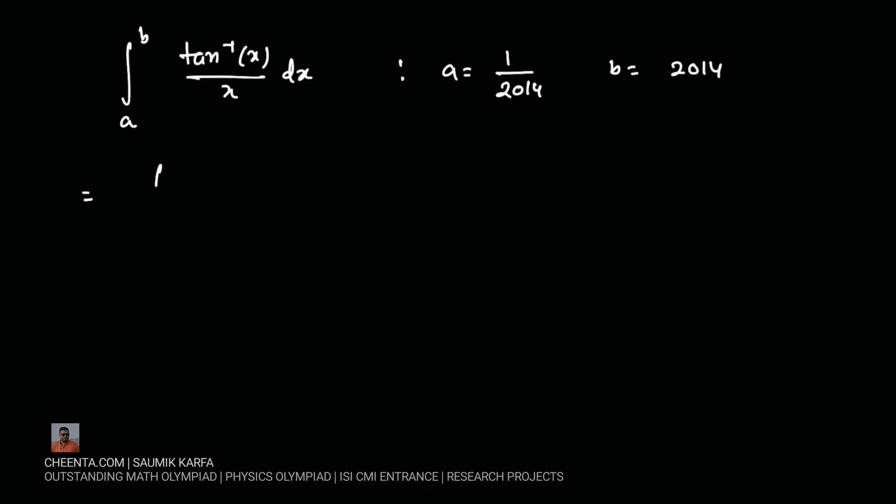So this would imply integration a to b of pi by 2x minus tan inverse 1 by x by x dx. Now first of all let us take our original integration as I. So I means this integration as well.